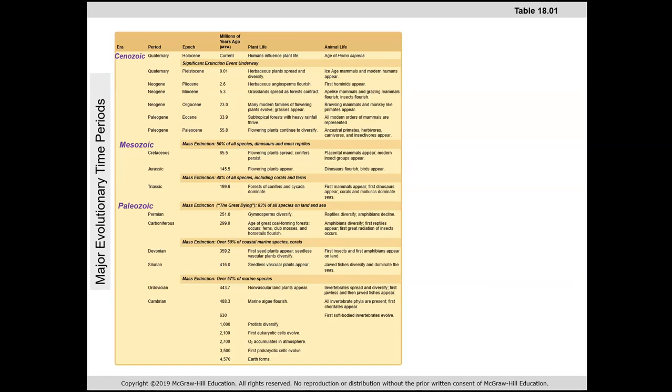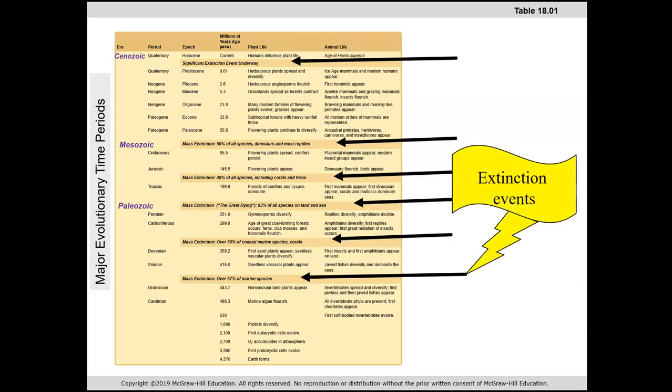These periods have names to them. We have the Paleozoic, which is one of the older time periods. This has sub-periods known as the Cambrian—one of the oldest time periods—and the Ordovician. After the Ordovician, we have a mass extinction. There have been five mass extinctions.